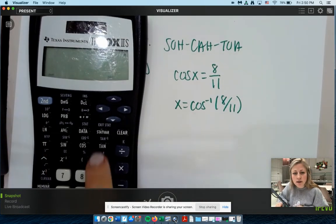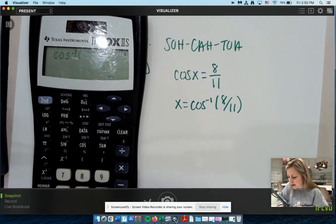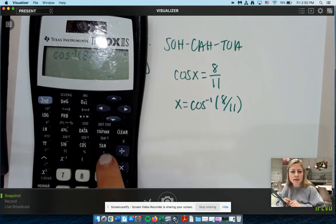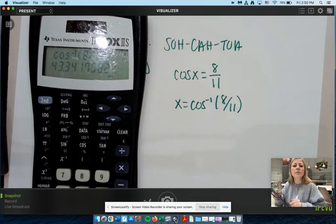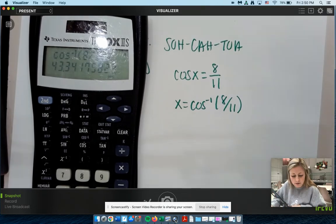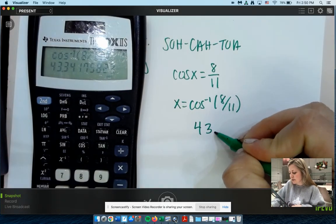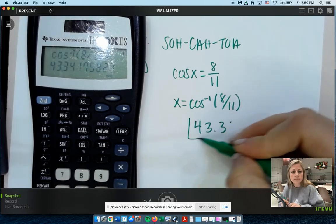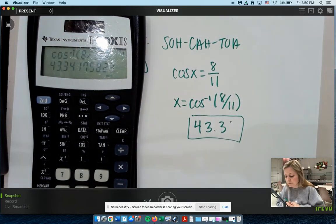So I'm going to write x equals cosine inverse. 8 divided by 11. And again on your calculator. Hit second. Cosine. 8 divided by 11. And your parentheses equals. But 43.3 degrees. That's it. One more.